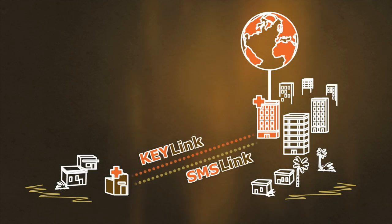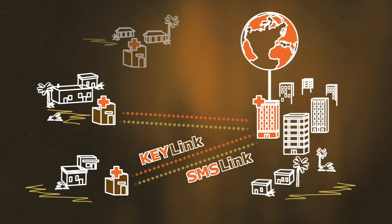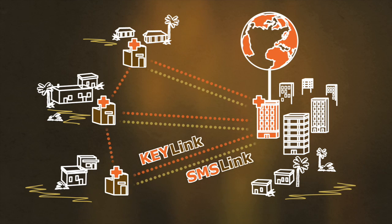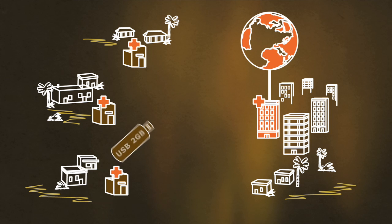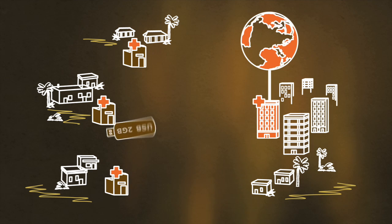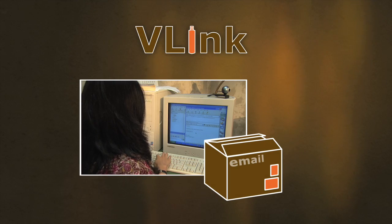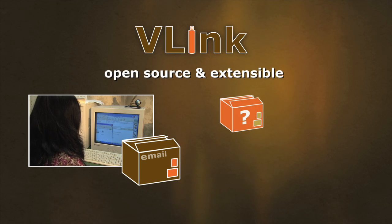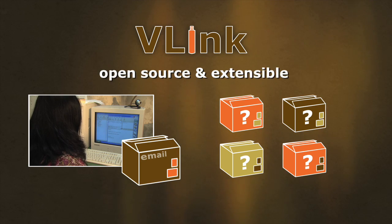V-Link is not limited to providing email access to a single computer in a rural village. V-Link can support multiple field offices that all share the same internet-connected proxy computer at the head office. The USB memory sticks don't need to go directly from each field office to the proxy — they can be connected in any order to multiple rural workstations before eventually going back to the head office. V-Link ships with fully functioning email, but because it is open source and built to be easily extensible, developers are encouraged to create entirely new applications that take advantage of the system.